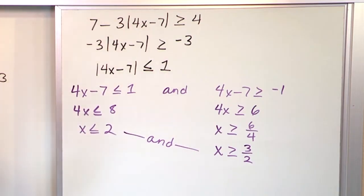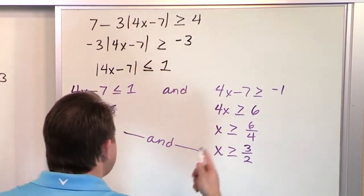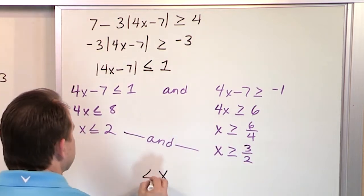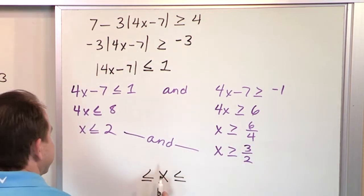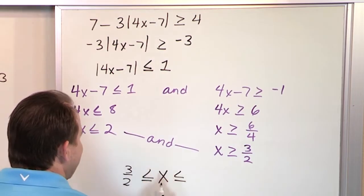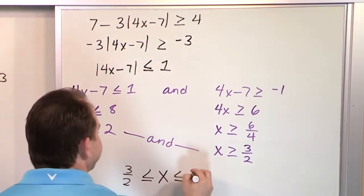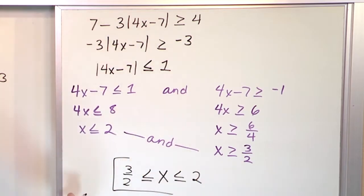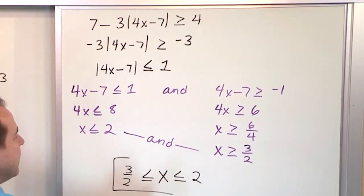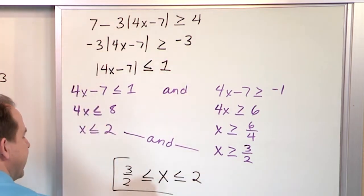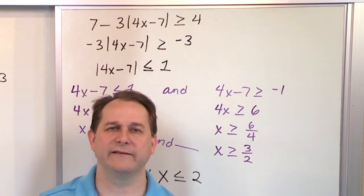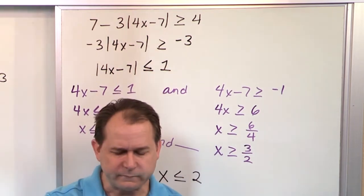Both of them have to be true at the same time. So because it's an 'and,' we write it as a compound inequality with x in the middle, equal signs under both inequalities: 3 halves less than or equal to x less than or equal to 2. This defines a region — x is going to be bigger than 3 halves, which is 1 and a half, and less than or equal to 2. It forms a line segment shaded region on our number line, which is what 'and' type inequalities produce.